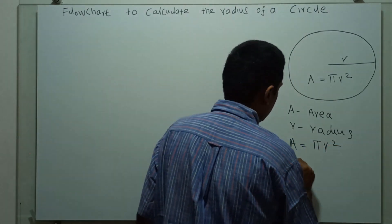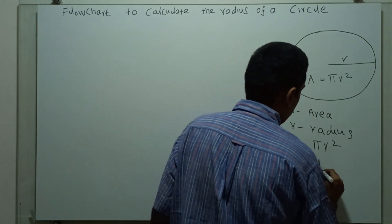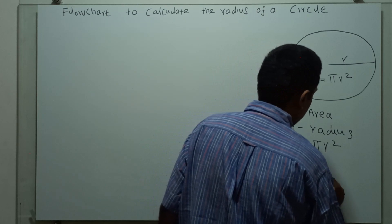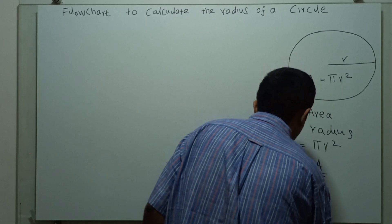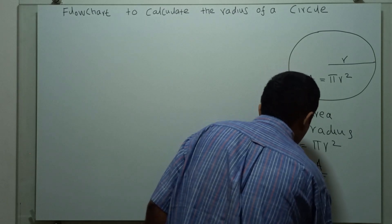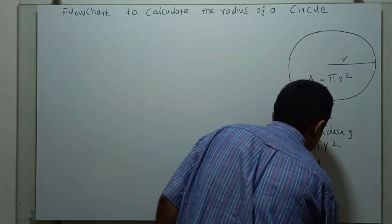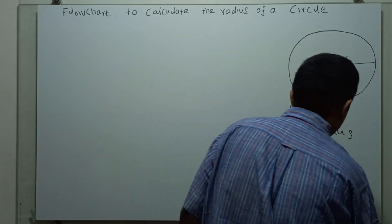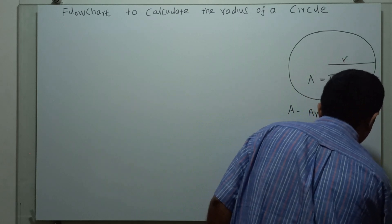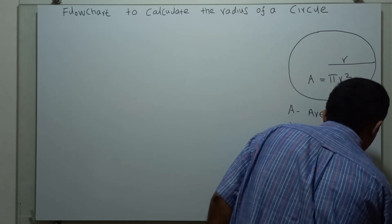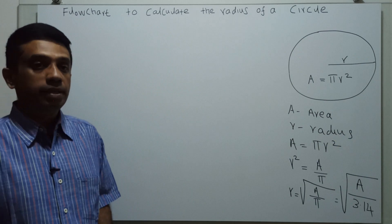Then we can say r square equal to A divided by pi. Then r equal to square root of A divided by pi, that is equal to square root of area divided by 3.14. So for this, we are going to draw a flow chart.